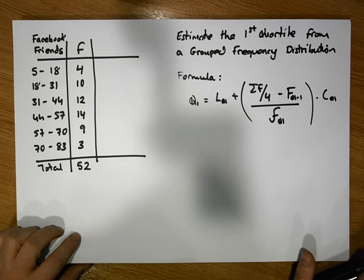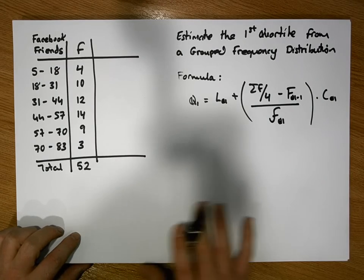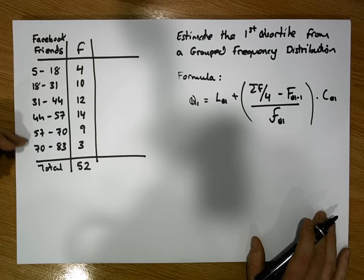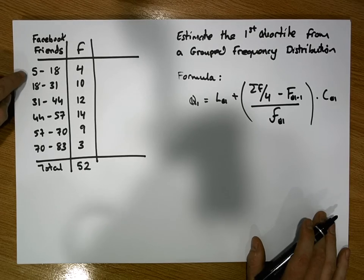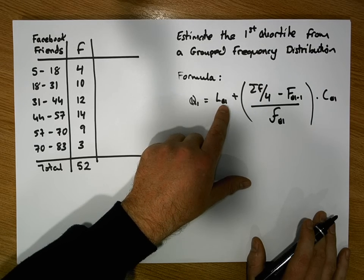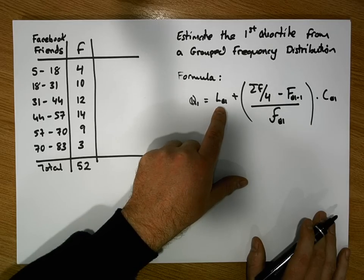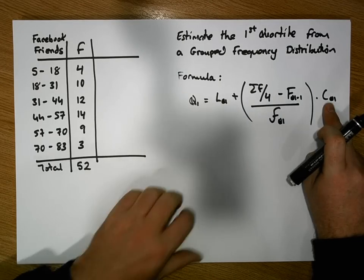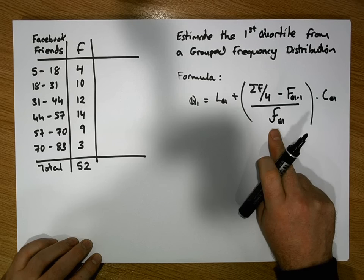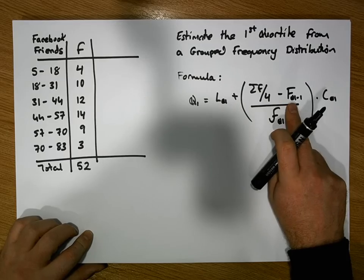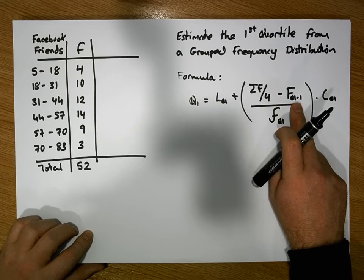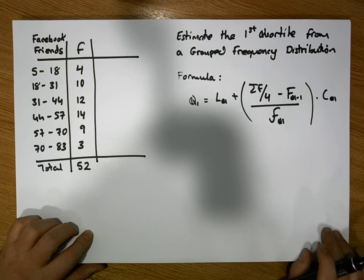Don't be alarmed by the complexity of this formula — it looks pretty complicated. The first goal is to identify the first quartile class. Once we have the first quartile class, that's what the subscripts Q₁ represent. L of Q₁ is the lower bound, C of Q₁ is the width, small f of Q₁ is the actual frequency, and capital F of Q₁ minus 1 is the cumulative frequency of the class before the first quartile class.